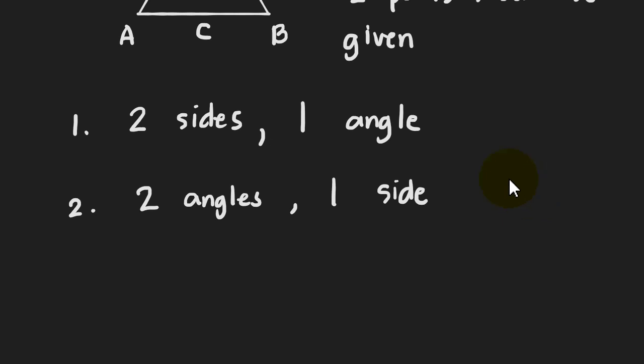For the first case, we can only use the sine law when the angle is opposite one of the given sides. We cannot use the sine law if the angle is not opposite one of the given sides.